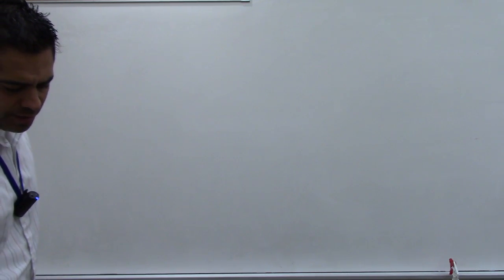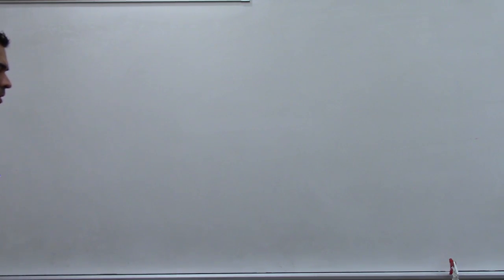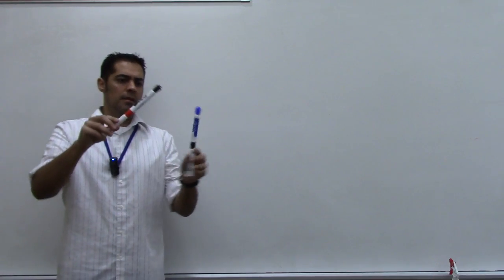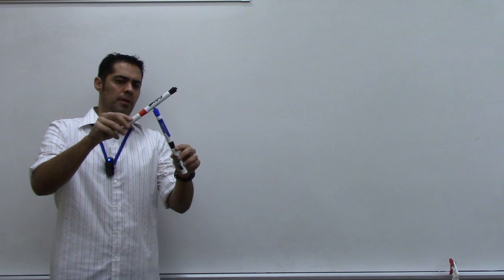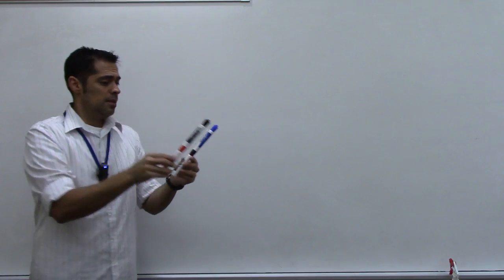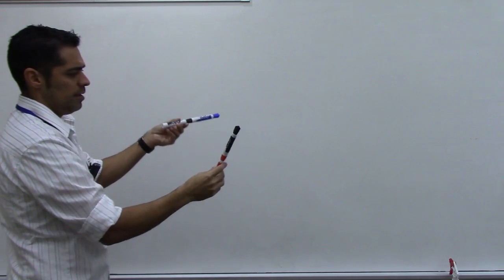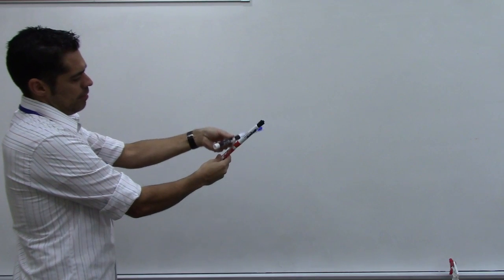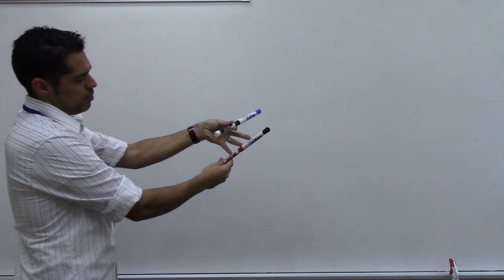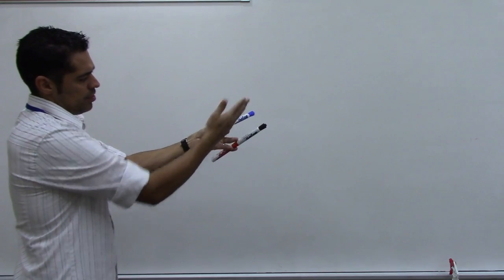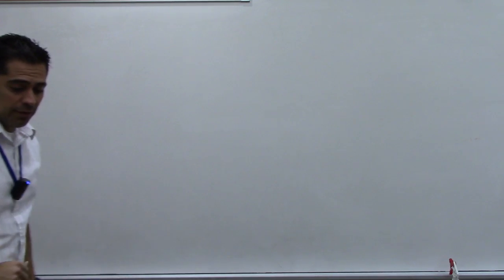Part J: two lines either intersect or are parallel. Lines could intersect or be parallel, but in three-dimensional space there's a third possibility. If I take two lines and raise one slightly, these two lines won't intersect each other and are also not parallel — they're skew lines. So it is false.